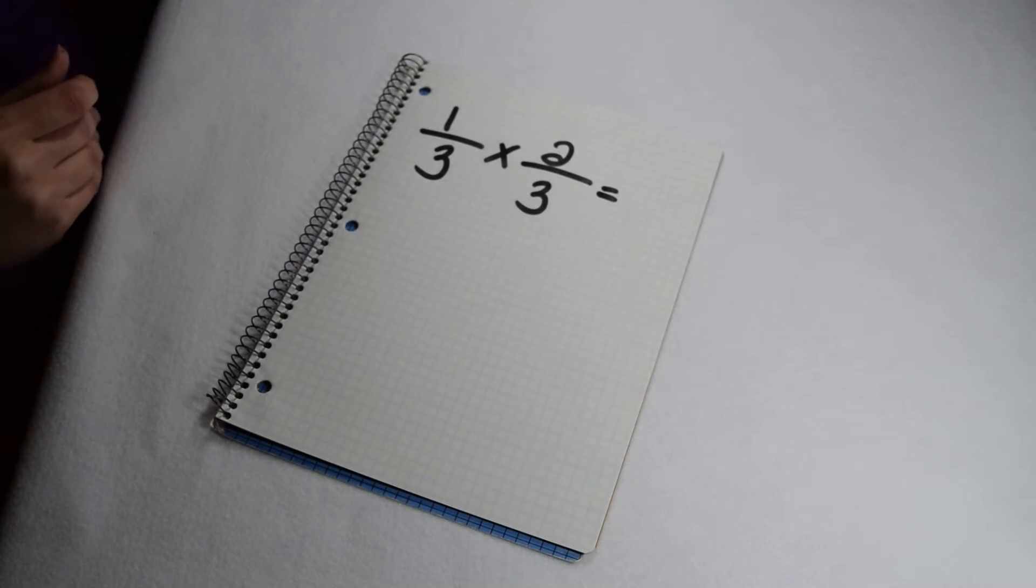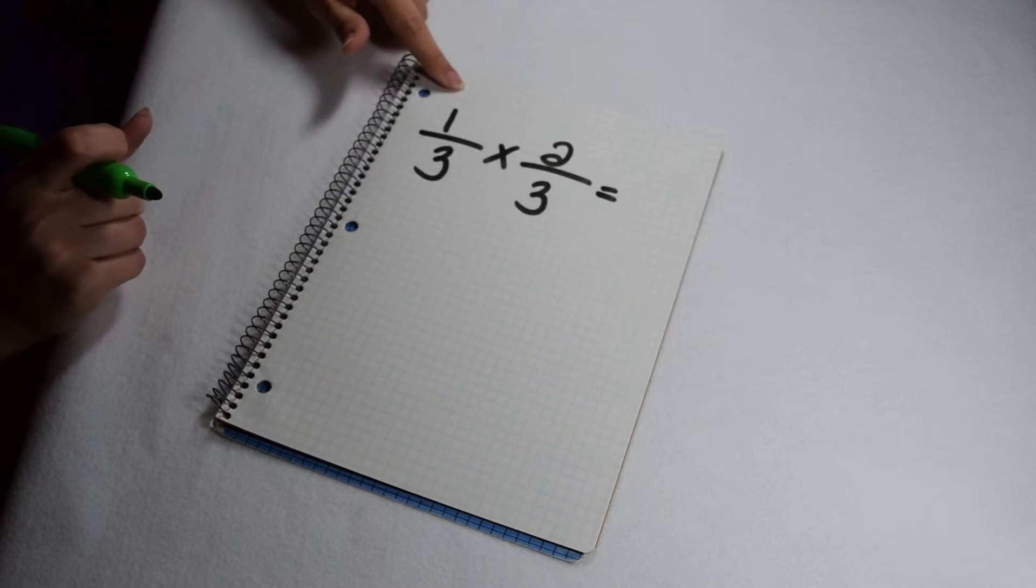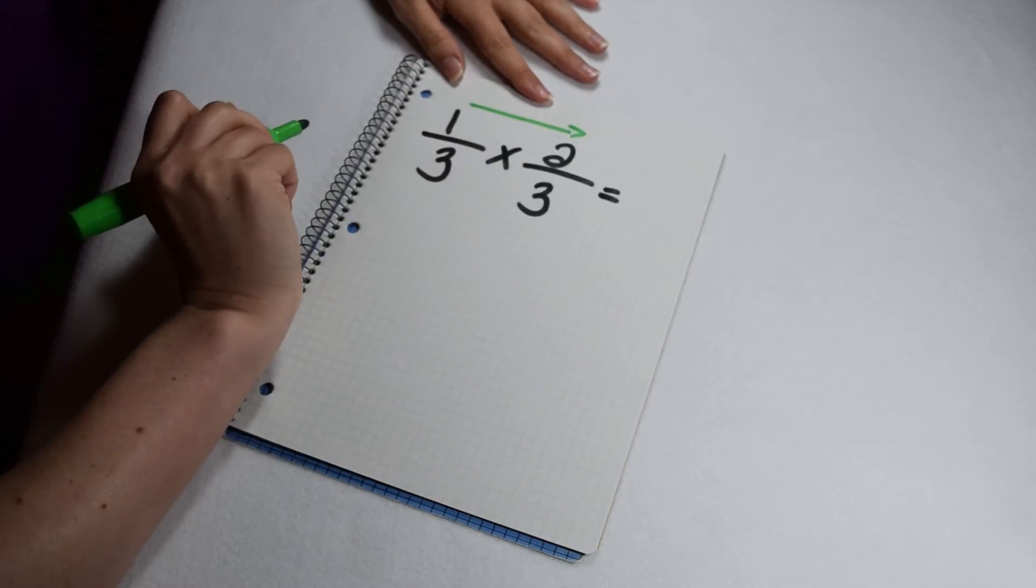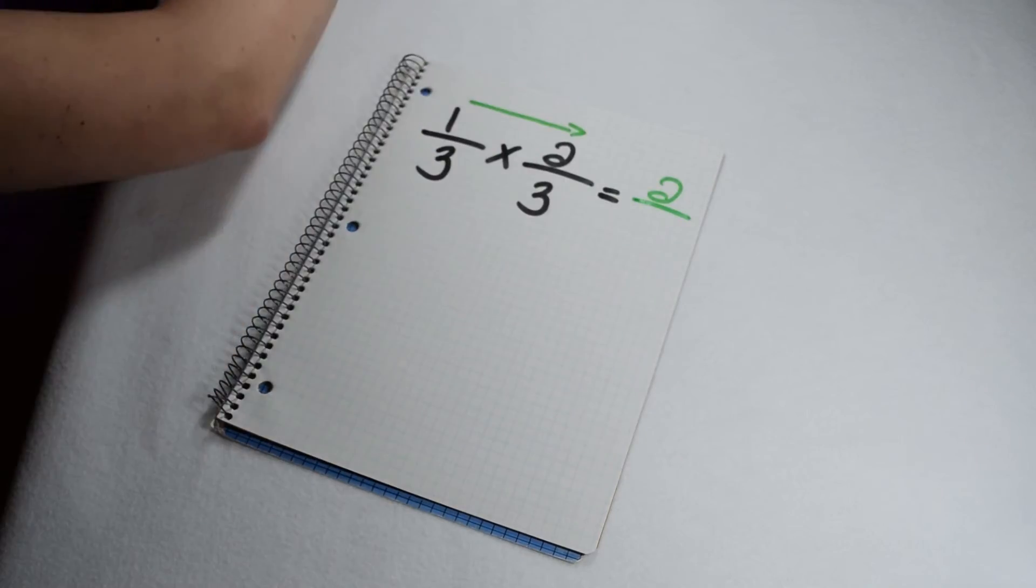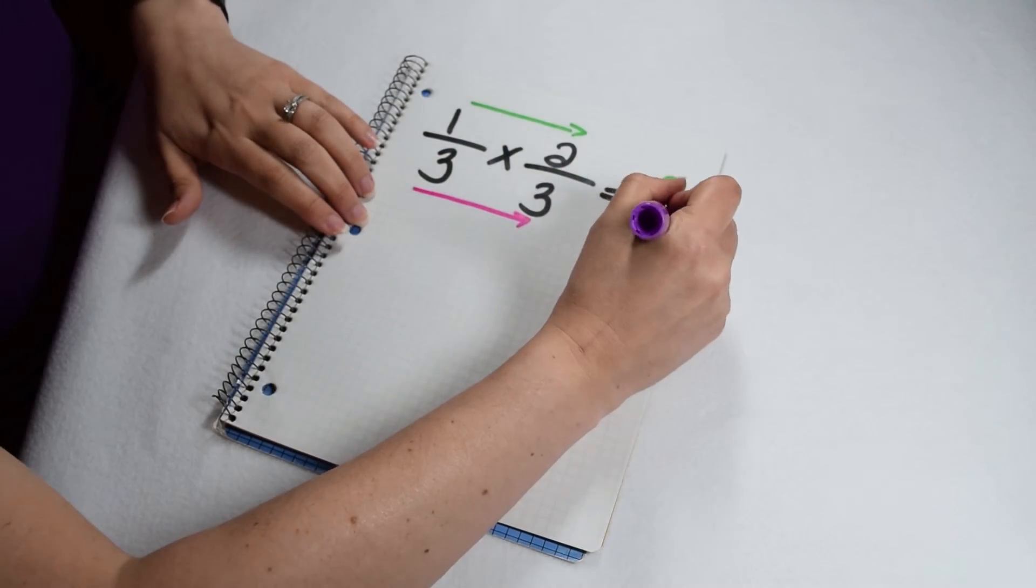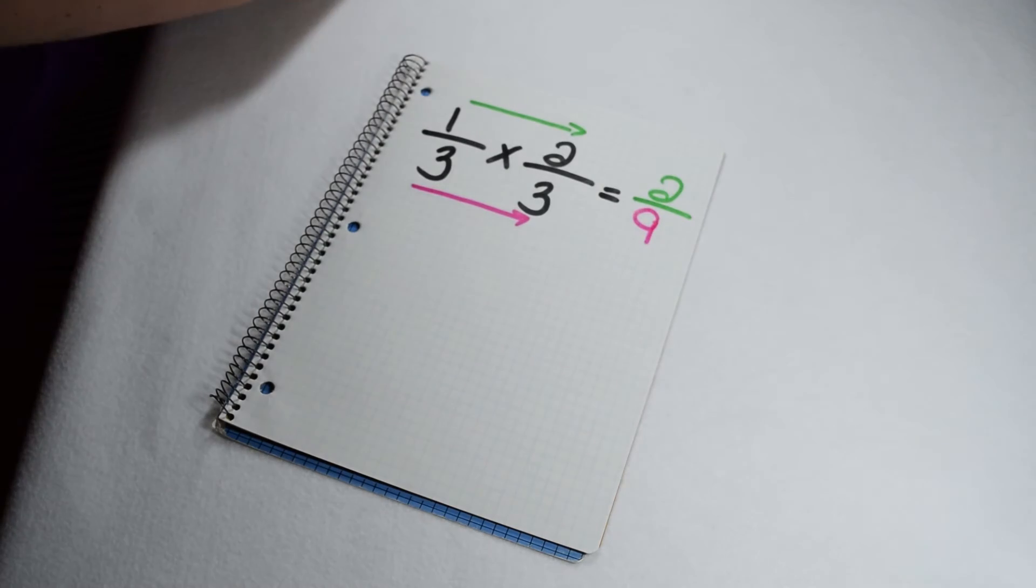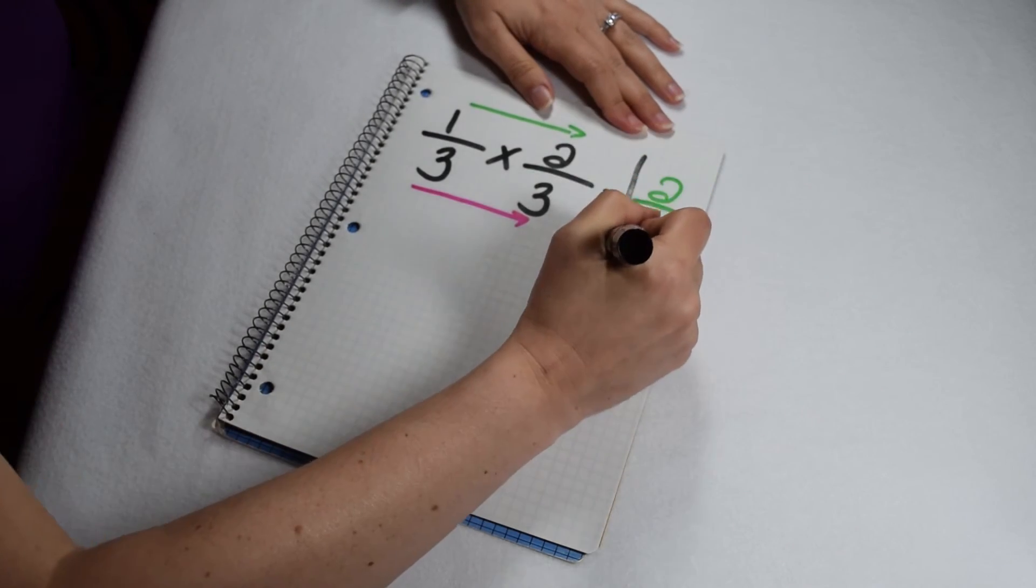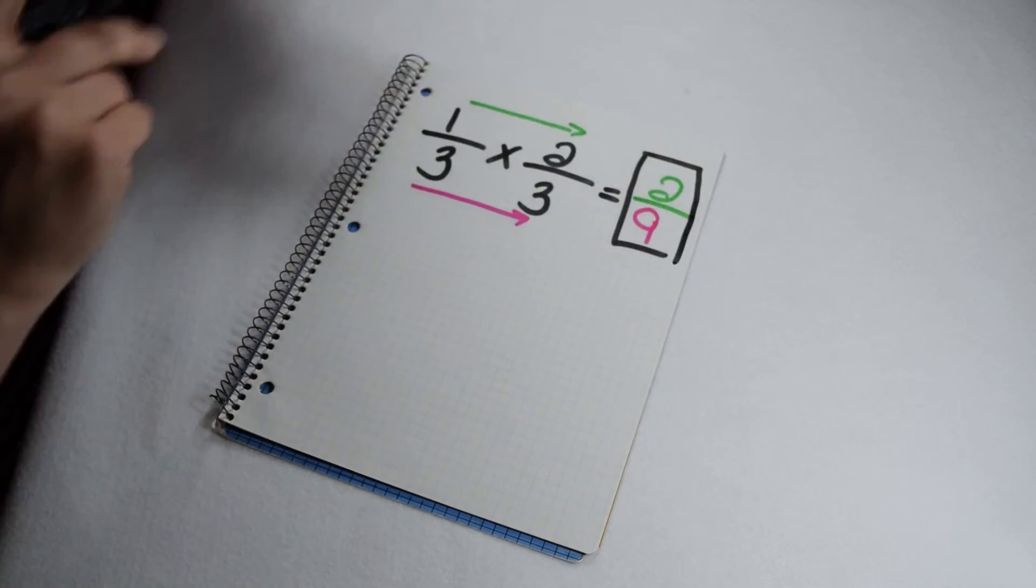So when we multiply two fractions together, like one third and two thirds, we start by simply multiplying our numerators together. So one times two is going to give me two. And then we multiply our denominators together. Three times three is going to give me nine. So one third times two thirds is going to give me two ninths.